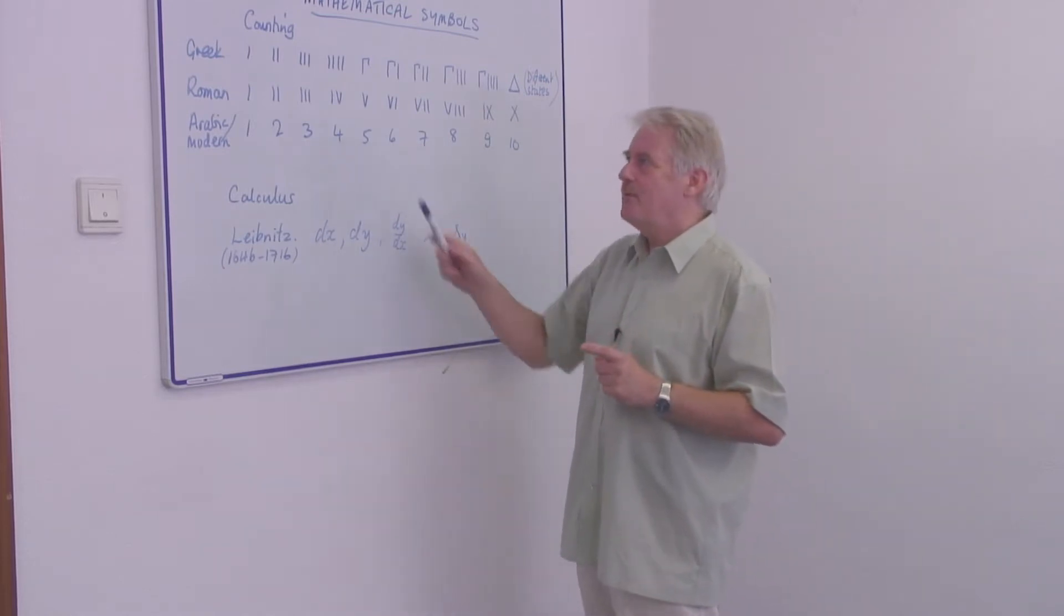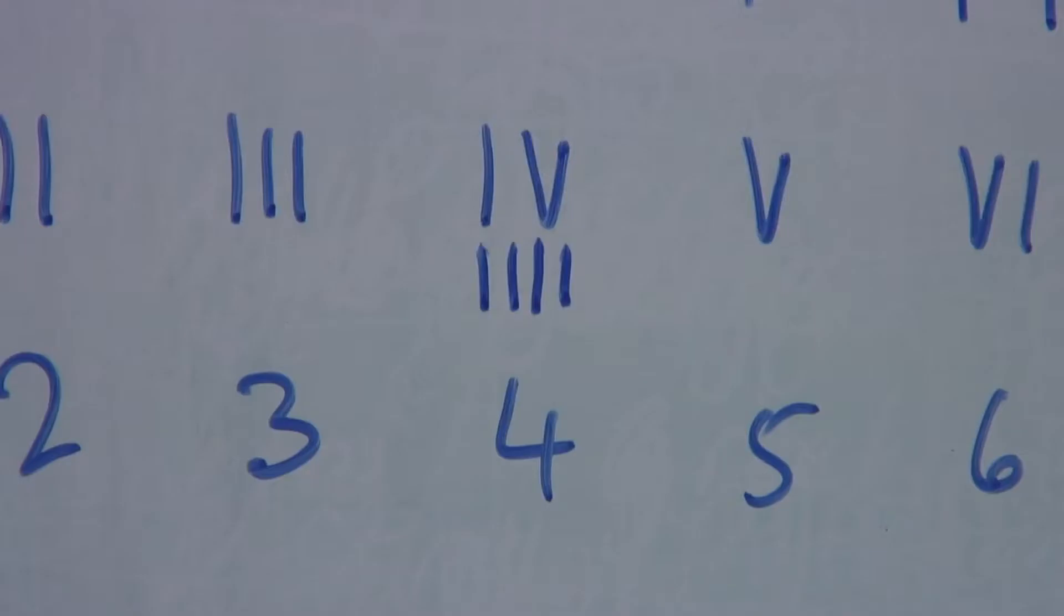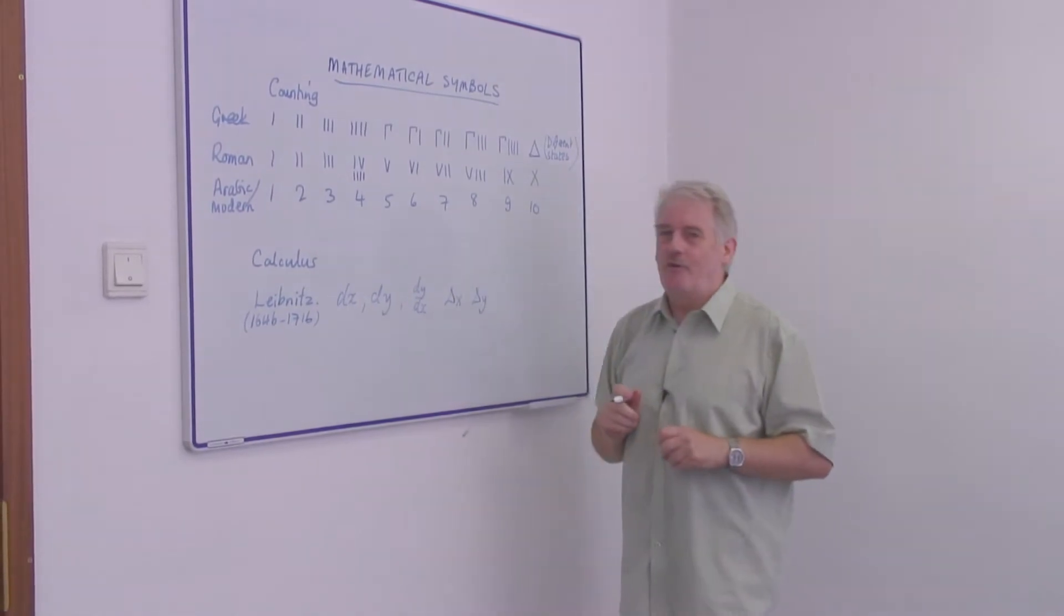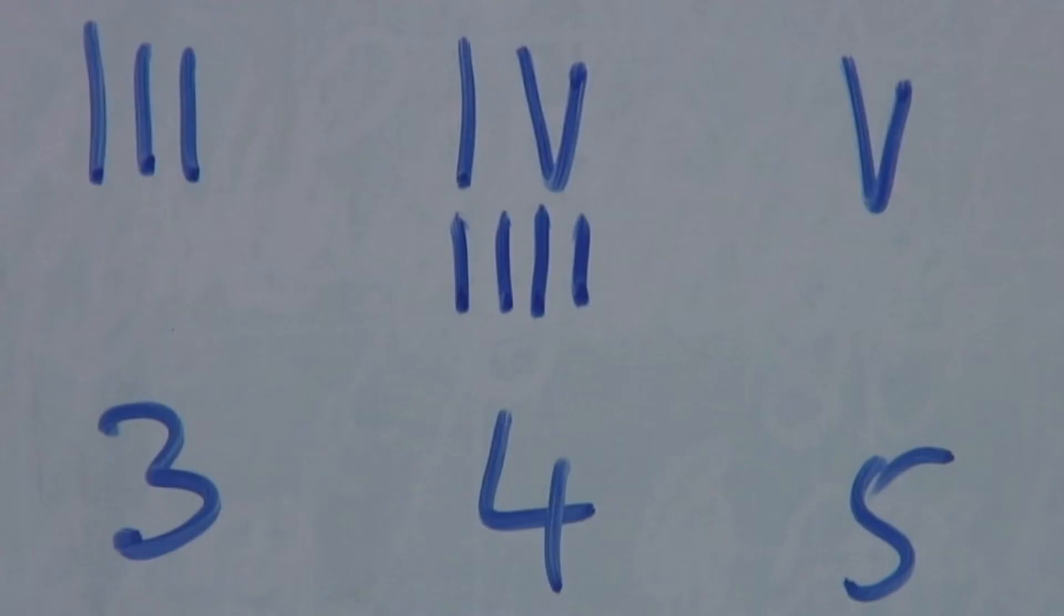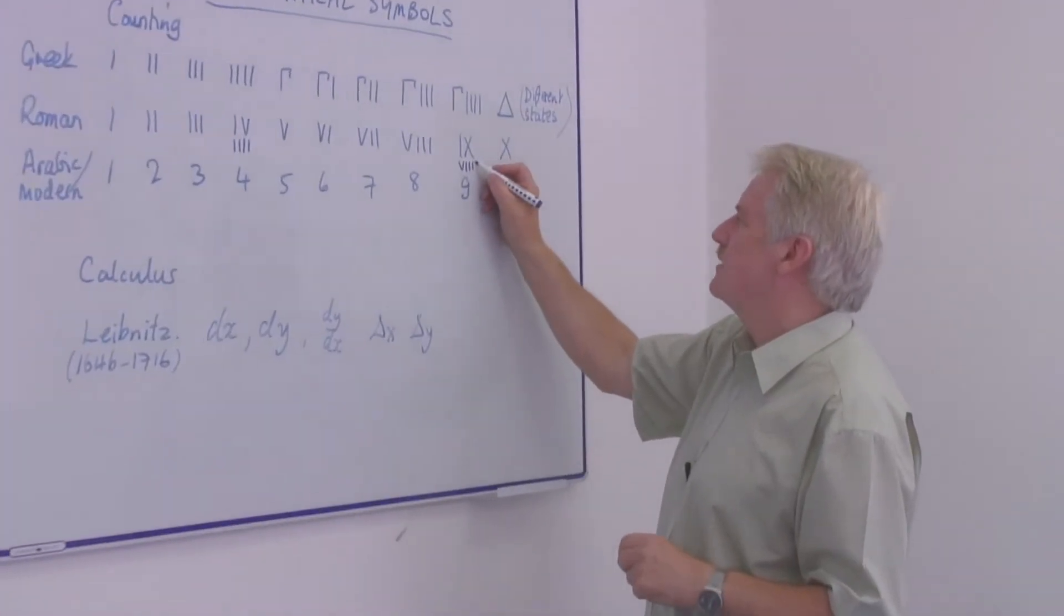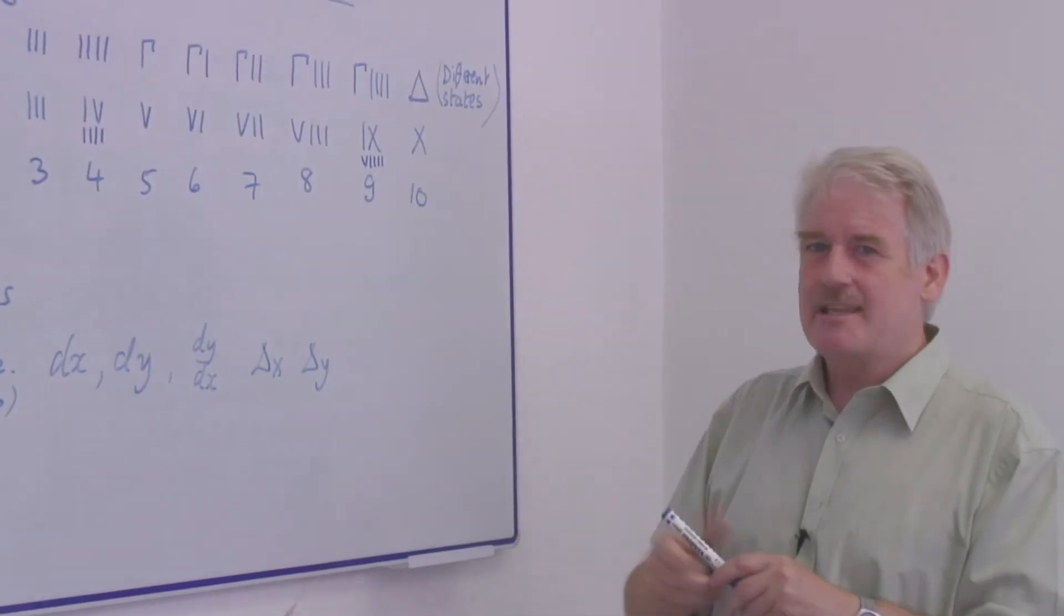The Romans didn't have a problem although you probably are aware that often where the Roman 4 is you will see 4 vertical lines like the Greek one. And also the 9 can be represented in the same way. So that's a similarity.